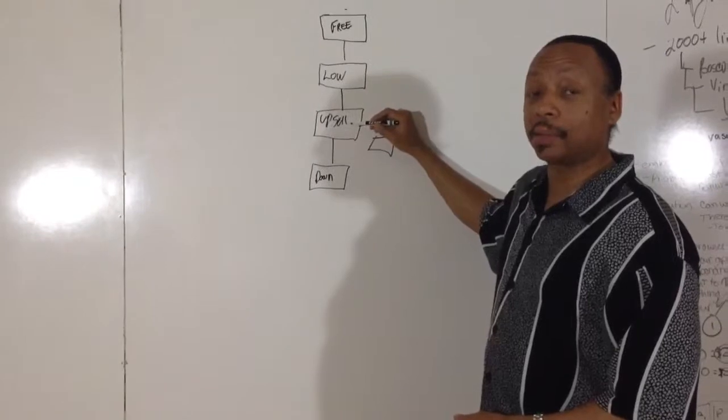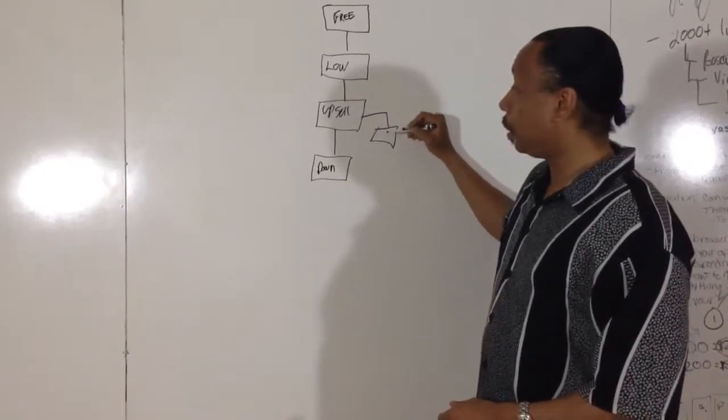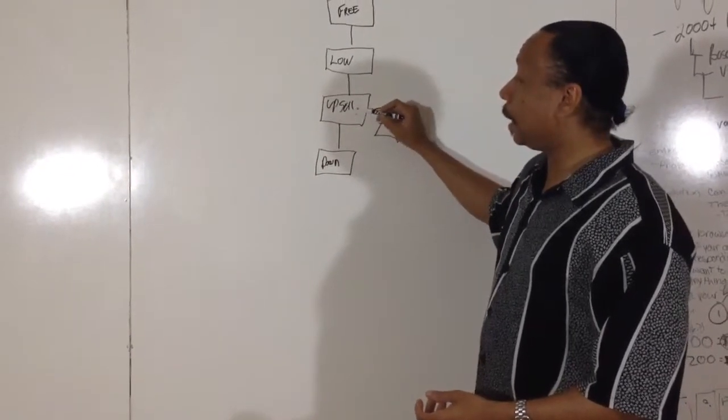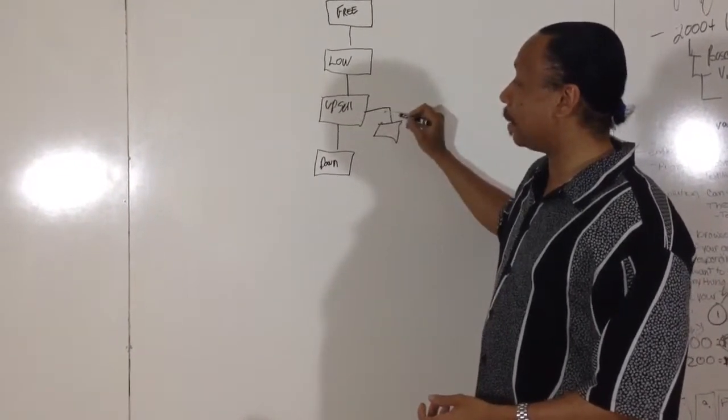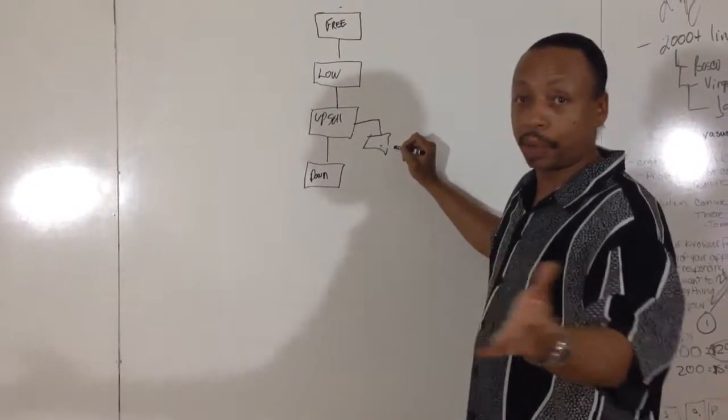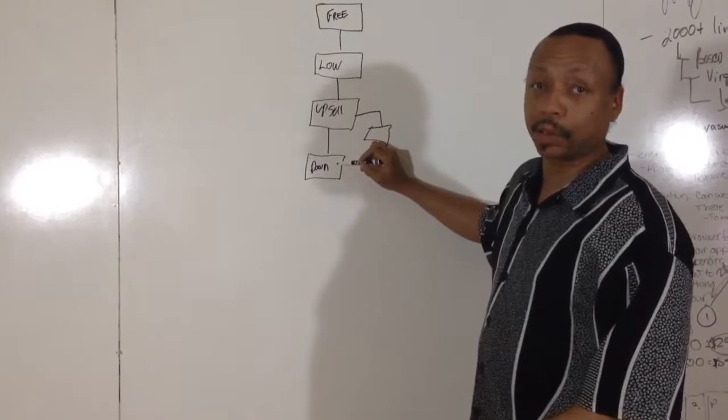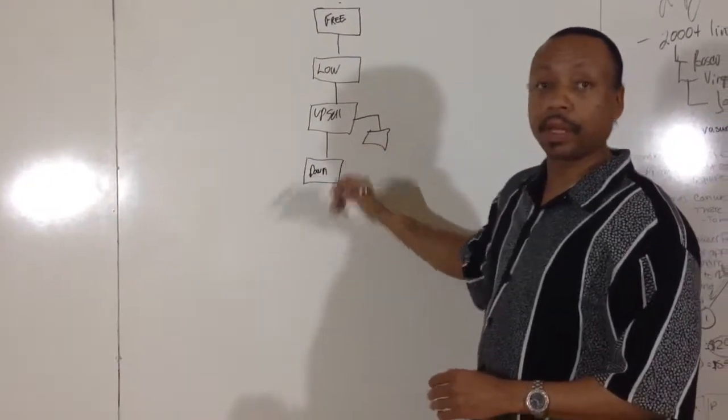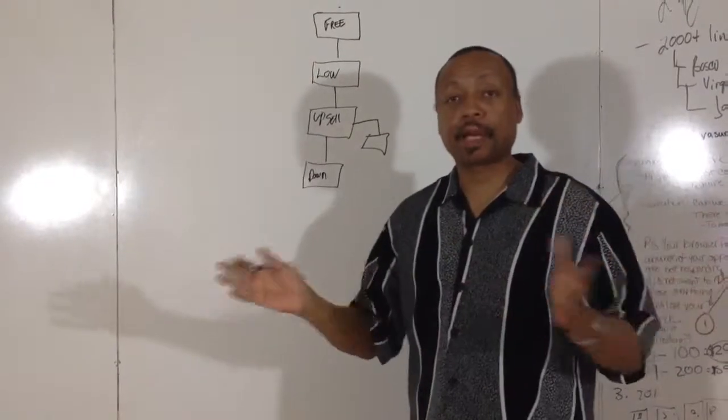Once they buy, take them to an up-sale. If they say no, the deal is closed out. If they say no to they don't want this, if they say yes, take them to close the deal. Take them to your credit card, PayPal, whatever you're using. If they say no, take them to a down-sale page. A down-sale page is lower than the original offer, and sell them something lower.